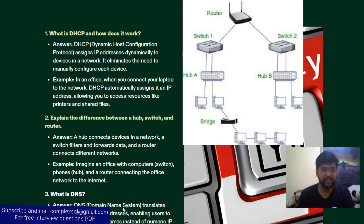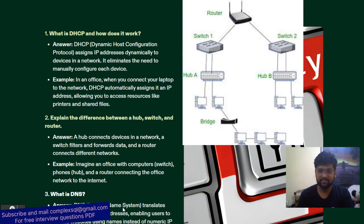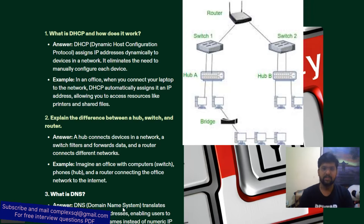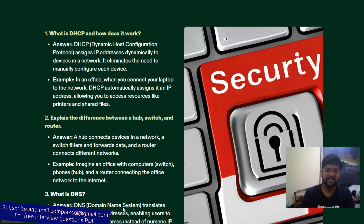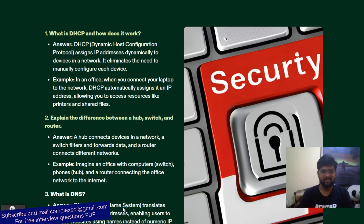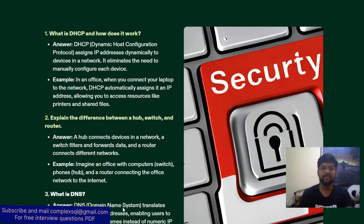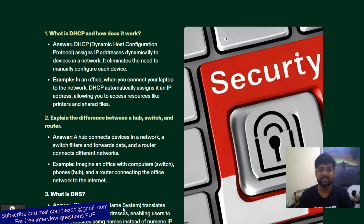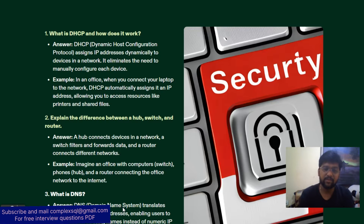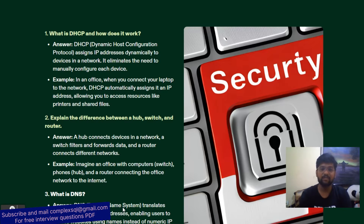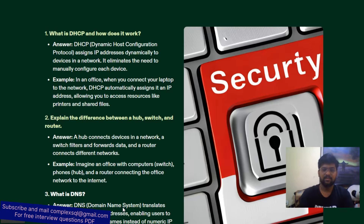Next question: explain the difference between a hub, switch, and router. A hub connects devices in the network. A switch filters and forwards data — it is not used simply to connect devices but to filter and forward data. A router connects different networks. Example: imagine an office with computers connected via a switch, phones or hubs, and a router connecting the office network to the internet.